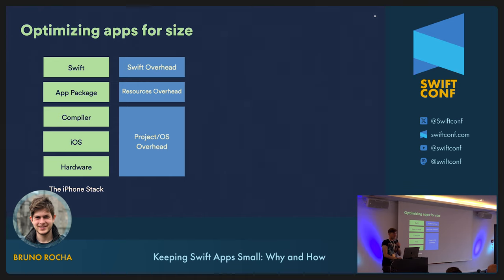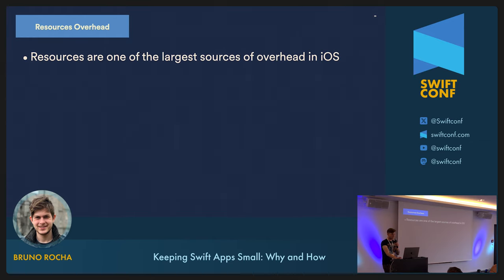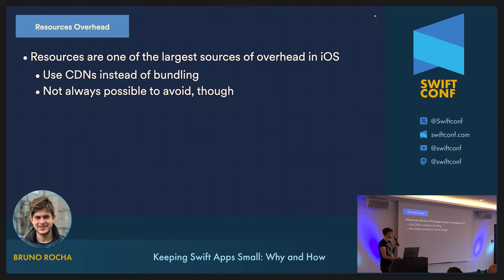When it comes to overhead in iOS, I like to group these problems into three different areas: Swift overhead, resources overhead, and project or operating system overhead. Out of these three, resources overhead is probably the one you need to be most careful about, because resources like images, audio, and JSON files are by far the largest source of unnecessary overhead in iOS. Thankfully, they're also the easiest to fix. Generally, what you want to do is simply not ship resources at all, opting to download them on demand via a CDN if possible.